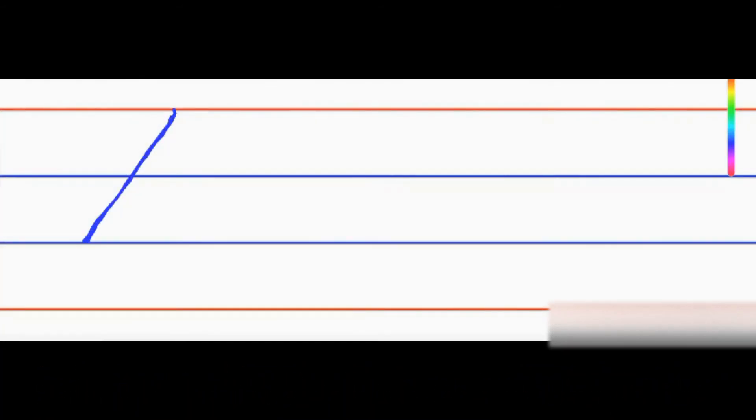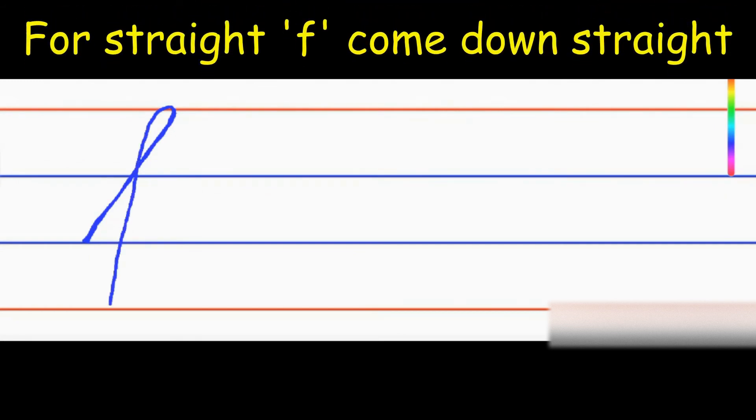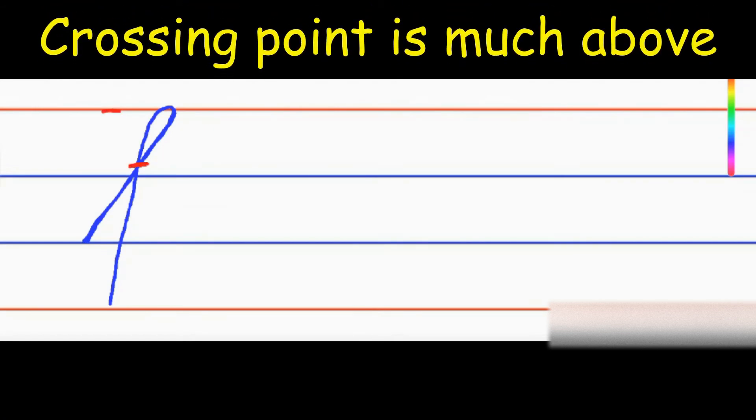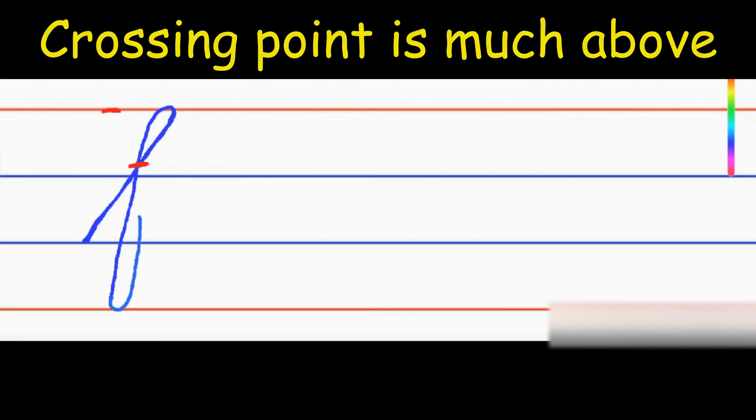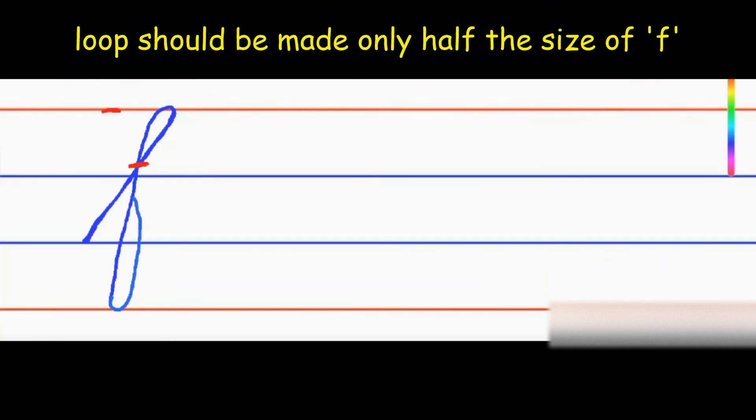Slant line up, take a turn and come down straight. Observe again, here we are crossing it much above, it is closer to the above red line, then completing this loop here.